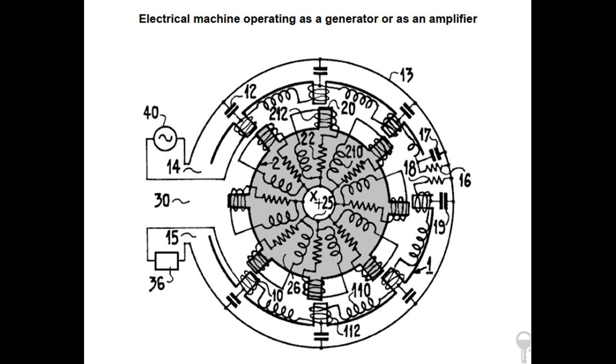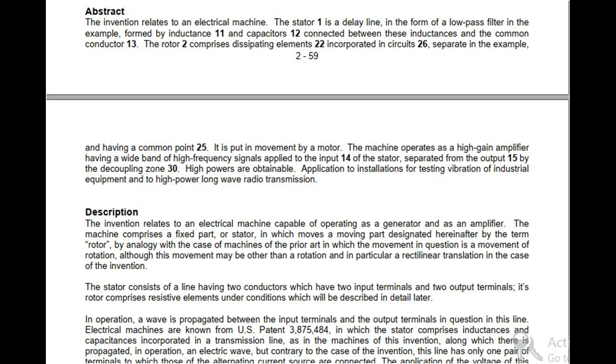Description. The invention relates to an electrical machine capable of operating as a generator and as an amplifier. The machine comprises a fixed part, or stator, in which moves a moving part designated here and after by the term rotor, by analogy with the case of machines of the prior art in which the movement in question is a movement of rotation, although this movement may be other than a rotation and in particular a rectilinear translation in the case of the invention.